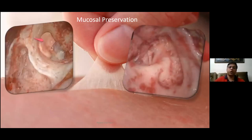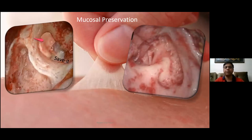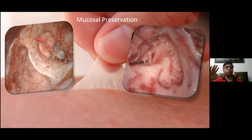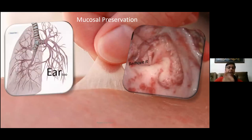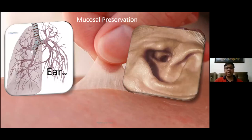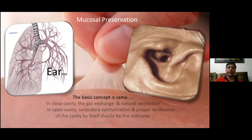One basic point most of us are missing is mucosal preservation. If you're doing a combined approach without taking out the canal wall, you have to follow the principle of PEST — preserve the mucosa from all around in the mastoid cavity and medial area. Don't try to take it out. If you're doing radical or modified radical mastoidectomy, you must take out each and every bit of mucosa. In a closed cavity, gas exchange and natural ventilation are the key; in an open cavity, secondary epithelization and proper ventilation of the cavity are the outcome.